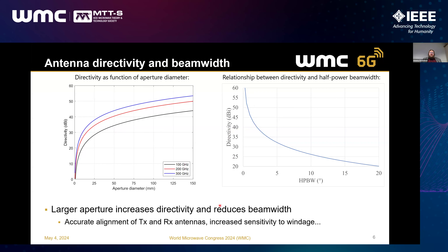When talking about very narrow beams, especially if we have those on both sides of the link at the transmitter and receiver, this calls for very accurate alignment to ensure the beams are actually meeting, as well as some other effects like more sensitivity to windage and other effects if we have an outdoor scenario where we are applying our high-frequency system.